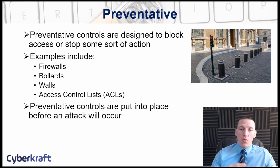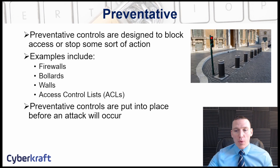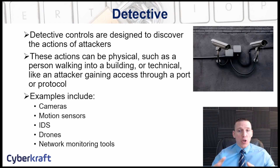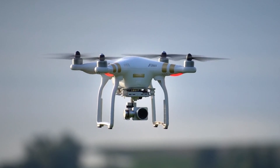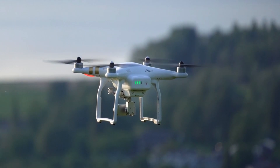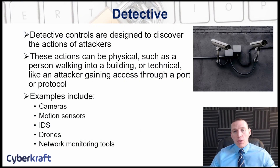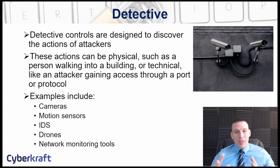Detective controls are put in place before an attack occurs and are designed to detect intrusions, usually man-made in nature — hacking attempts or physical intrusions. A physical detective control would be a camera, a guard, or a drone. Motion sensors, either infrared or microwave, can be really good detective physical controls. Technical detective controls include intrusion detection systems and network monitoring tools to detect unauthorized access.